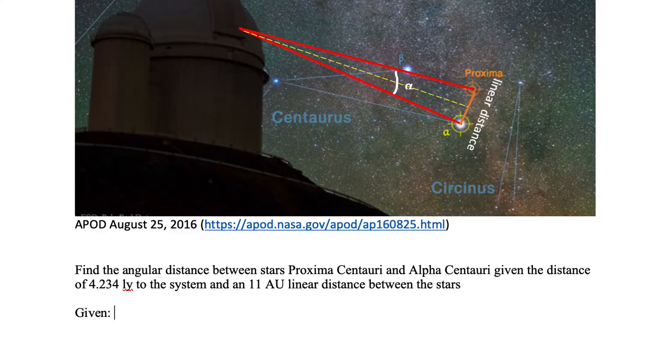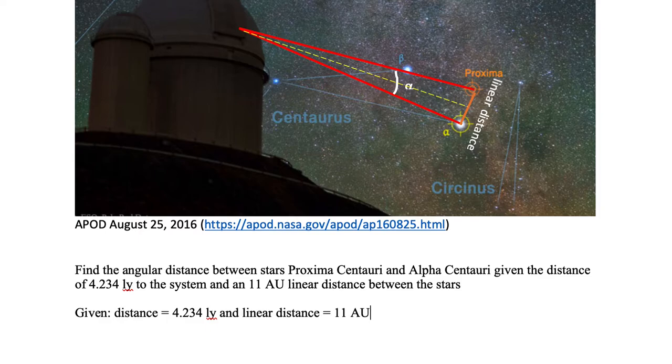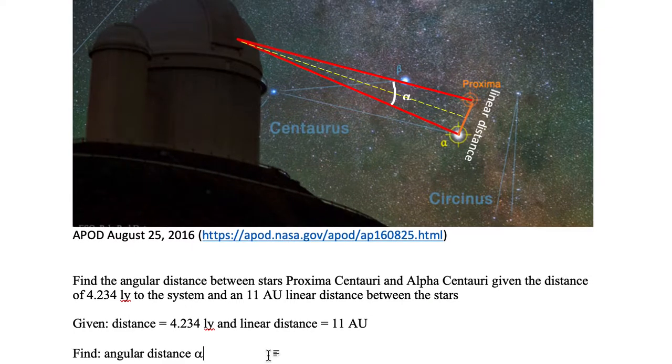We want to find the given, which is the distance of the system is 4.234 light years and a linear distance between the two stars of 11 AU. Now we want to study the question and find the 'find' part of the problem. We want to find the angular distance Alpha, this angular distance in the sky separating these two stars.